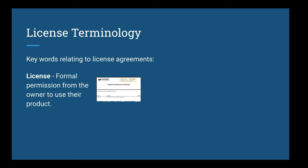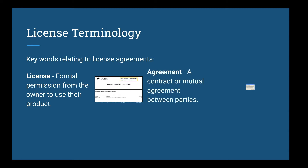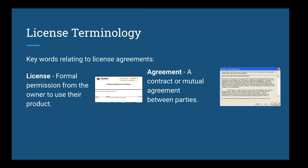Some terminology: A license is a formal permission from the owner of a product to use that software or product. Software licenses are generally non-exclusive, meaning that it can be licensed by multiple users. An agreement or contract between parties can be done through clicking the OK button — for example, the EULA on Windows, the end-user license agreement.